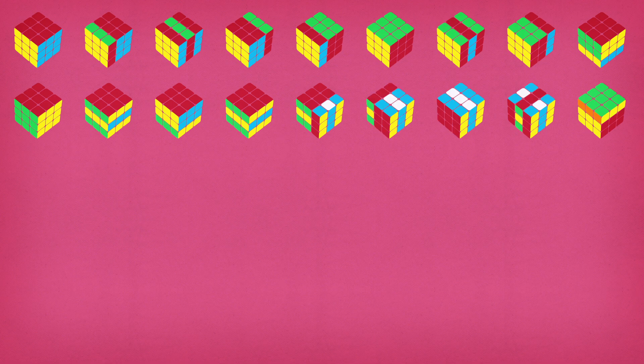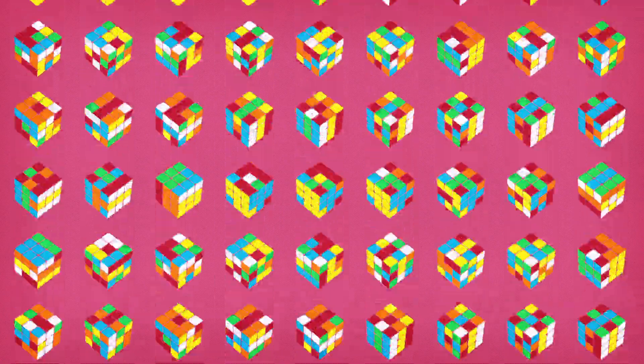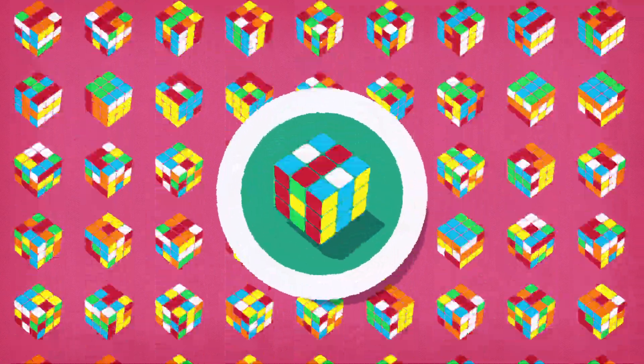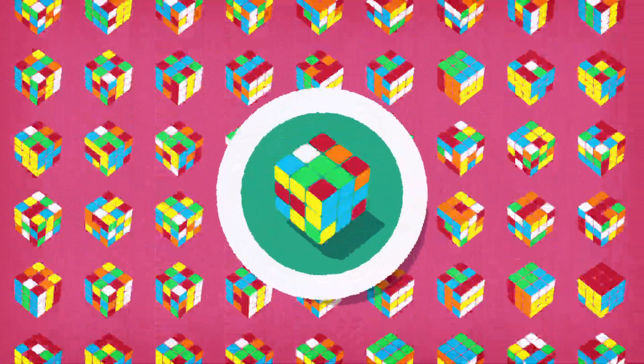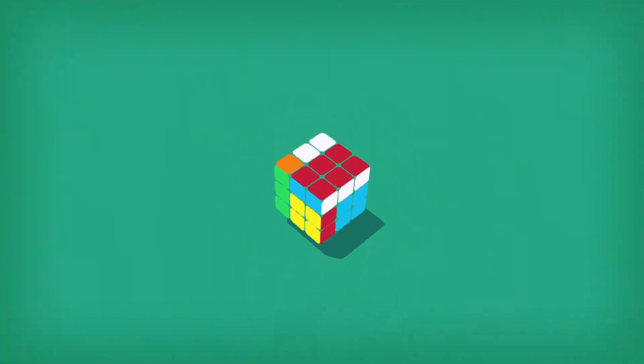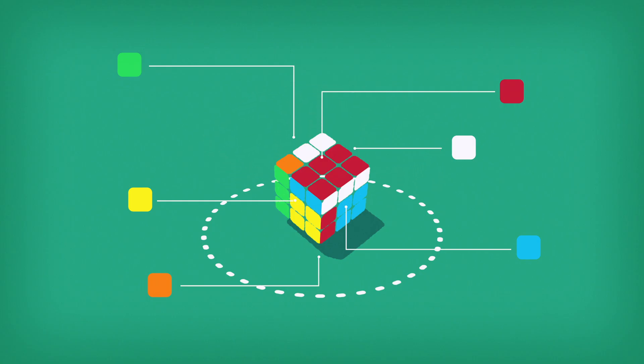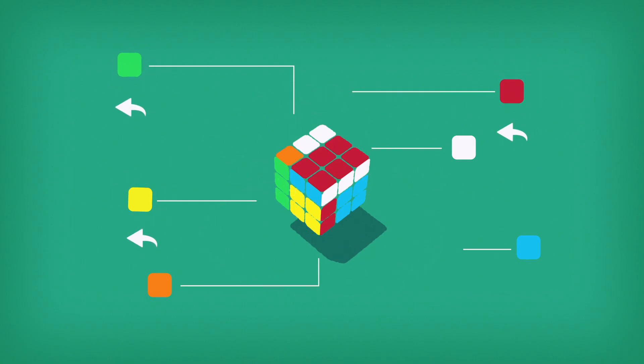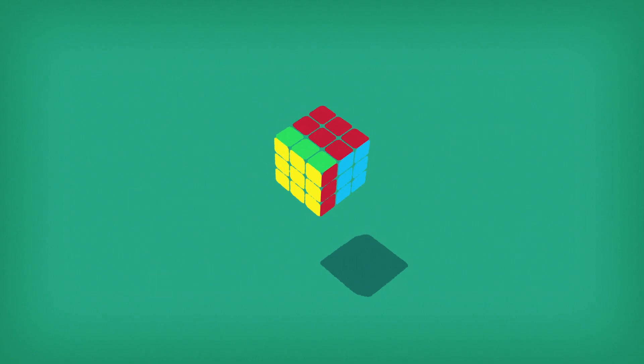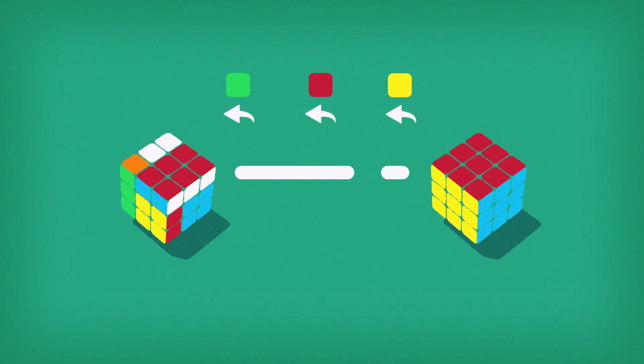A Rubik's cube has more than 43 quintillion permutations, so trying to solve it randomly isn't going to work so well. However, using group theory, we can analyze the cube and determine a sequence of permutations that will result in a solution. And in fact, that's exactly what most solvers do, even using a group theory notation indicating turns.